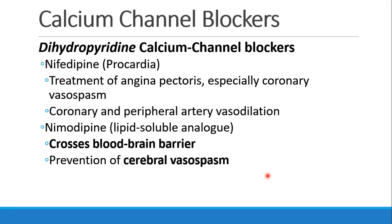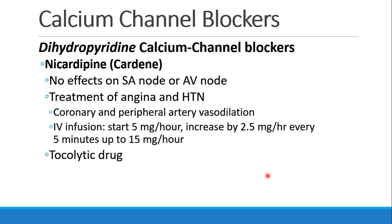Nimodipine is similar but can cross the blood-brain barrier because it's lipid-soluble, making it very useful in treatment or prevention of cerebral vasospasm. Nicardipine, or Cardene, has virtually no effect on the SA or AV node, so it's really used as a vasodilator, treating angina and hypertension by vasodilating coronary and peripheral arteries. Usually it's run as an IV infusion starting at 5 milligrams per hour, titrating up by about 2.5 milligrams per hour every 5 minutes, with a maximum dose of typically 15 milligrams per hour. Nicardipine is also a tocolytic drug, meaning it can stop labor when not desired.